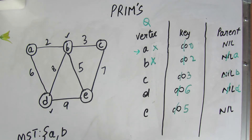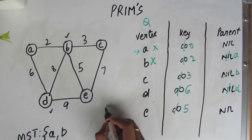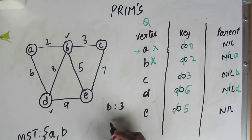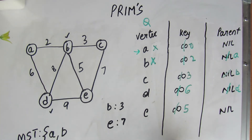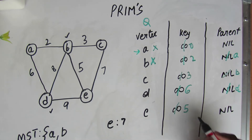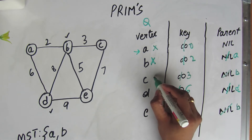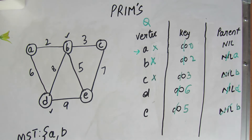We have two elements in the minimum spanning tree. Now let's extract another minimum from the set, which is C. C has edges to B with weight 3 and E with weight 7. However, B is already part of the minimum spanning tree so we do not consider it. For E, the current key value is 5 and we are considering 7, so we do not update E's key value.